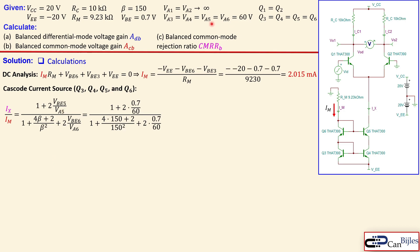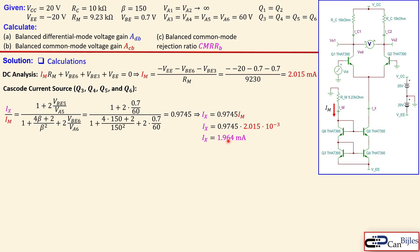We substitute the known values: VA5, VA6, the base-emitter voltages, and beta. This gives a factor of 0.9745, meaning Ix is not a one-to-one copy of Im. Multiplying through, Ix equals approximately 1.964 milliamps. You lose some current by copying in this fashion.